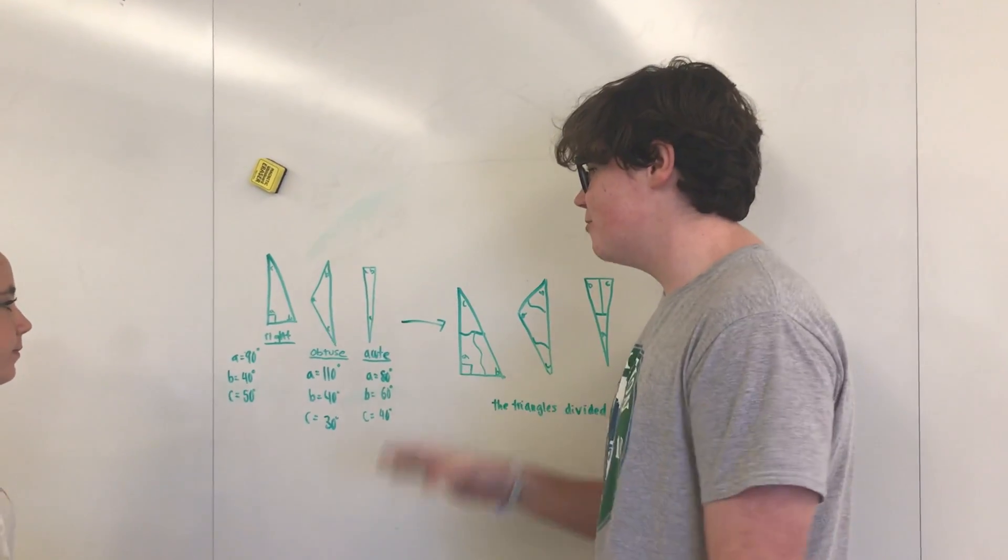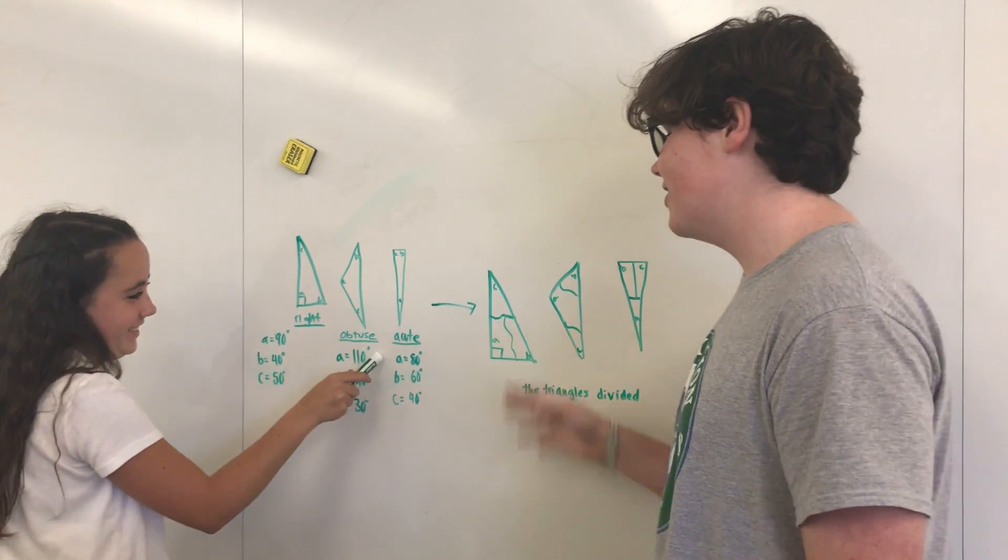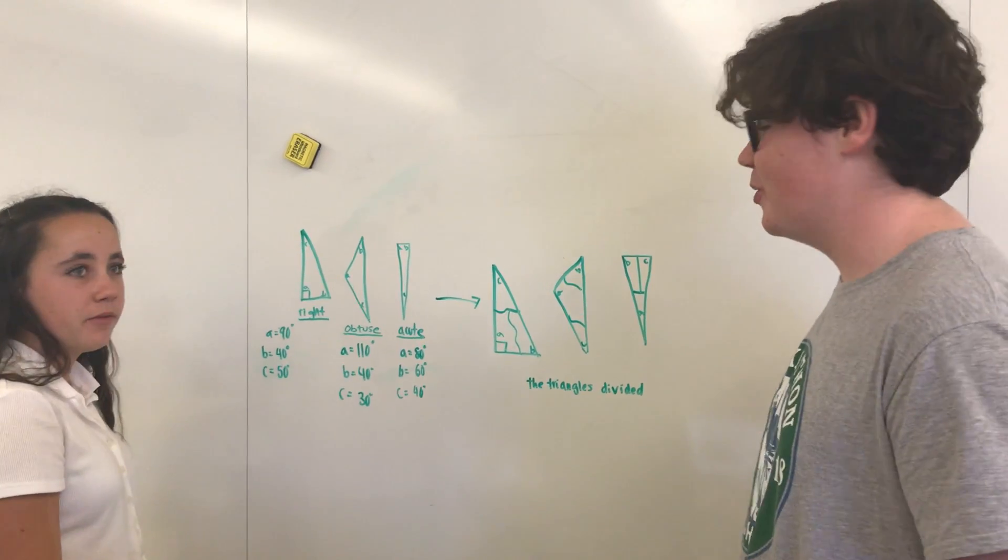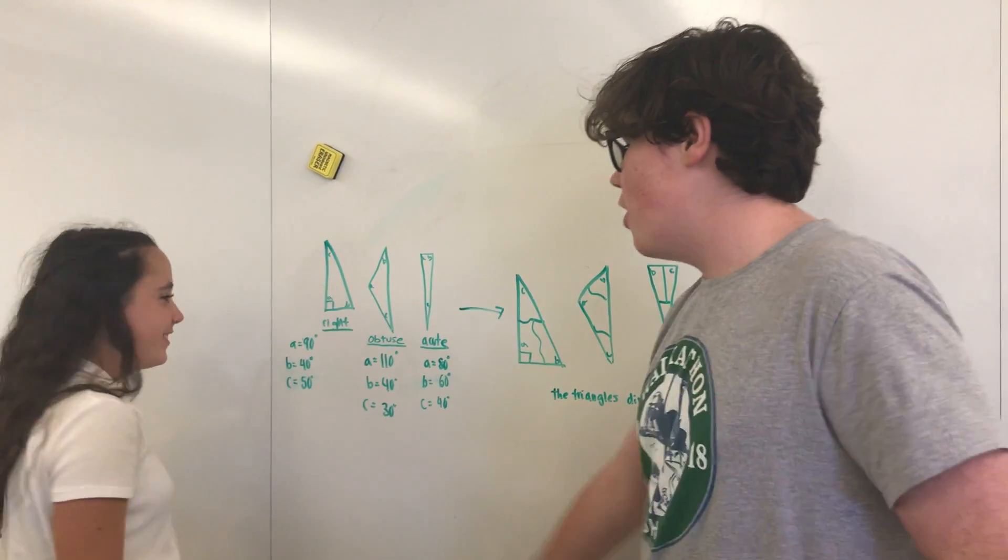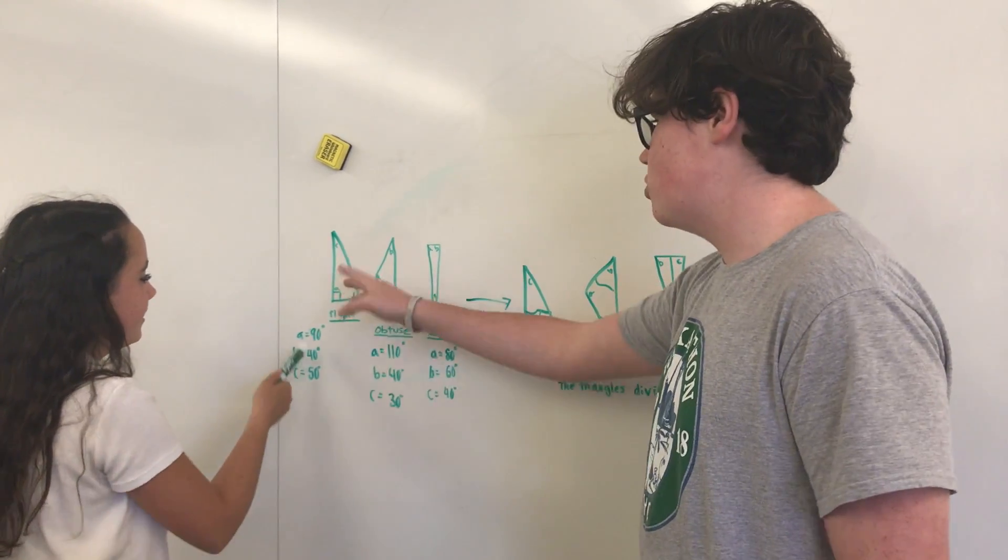We have three triangles: a right triangle, an obtuse triangle, and an acute triangle. These are all the degrees of each triangle.